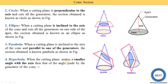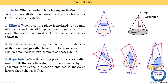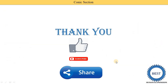Last one is the hyperbola — when the cutting plane makes a smaller angle with the axis than the angle made by the generators of the cone, the section obtained is known as the hyperbola. We reduce the angle — the section plane has a smaller angle with the horizontal axis — and we achieve this shape, which is called the hyperbola.